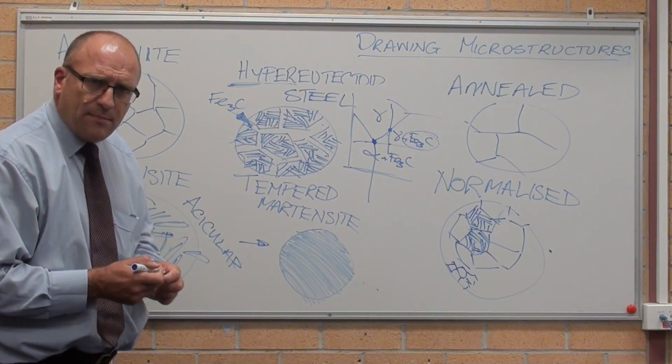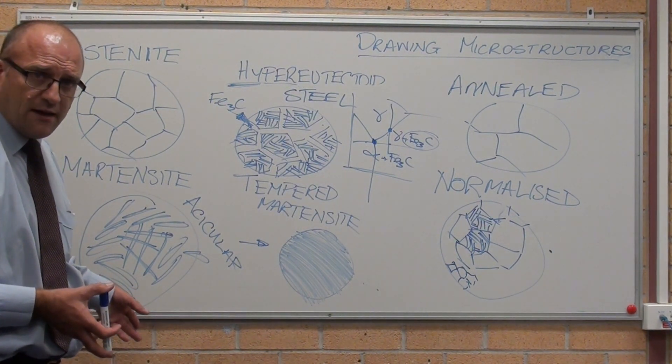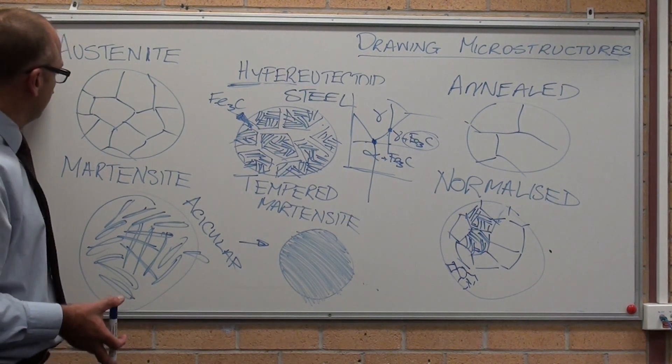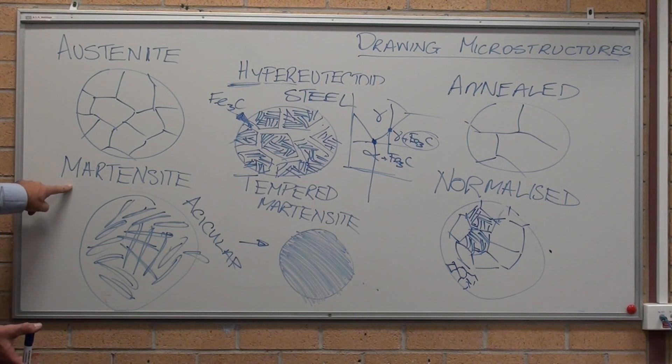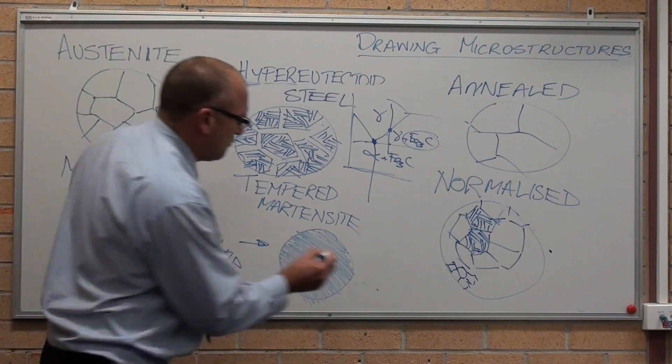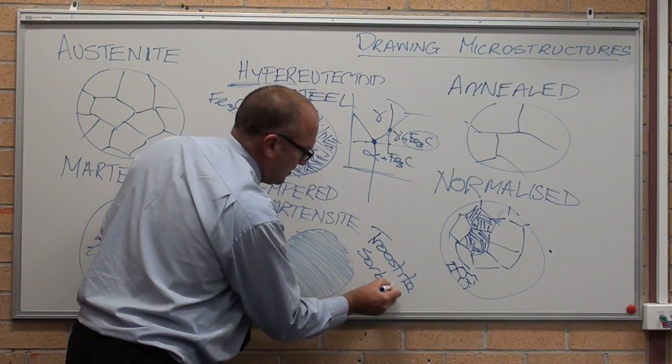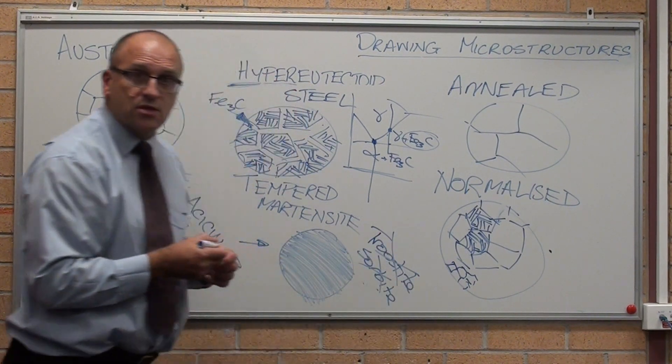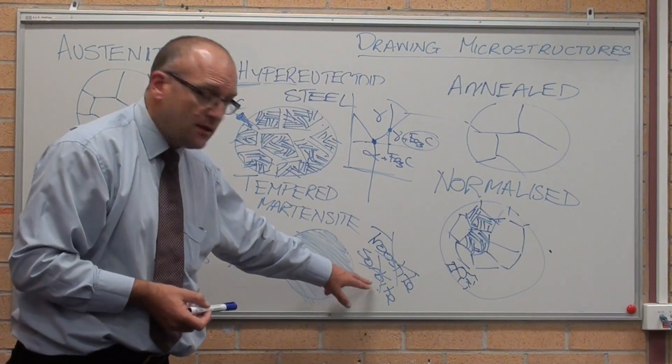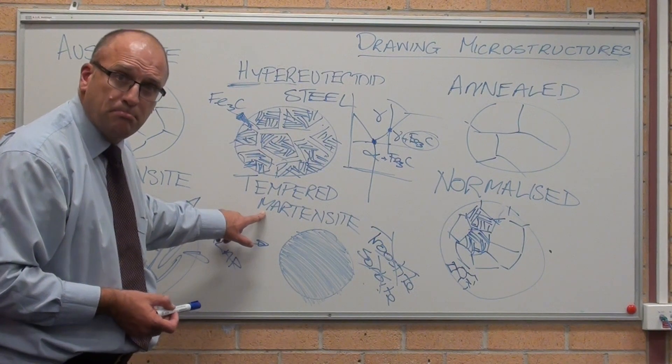Now, metallurgy, way back in the 1800s when they discovered all this, was full of people that named stuff after themselves. Austenite, Mr. Austin found that. That's named after Mr. Martens, Conrad Martens. Tempered martensite, sometimes you'll see in a book Trustite or Sorbite. Don't use those terms. But Mr. Trust and Mr. Sorby found those and they named them after themselves as well. It's called tempered martensite. If you see those terms, that's what it means, but don't use them.